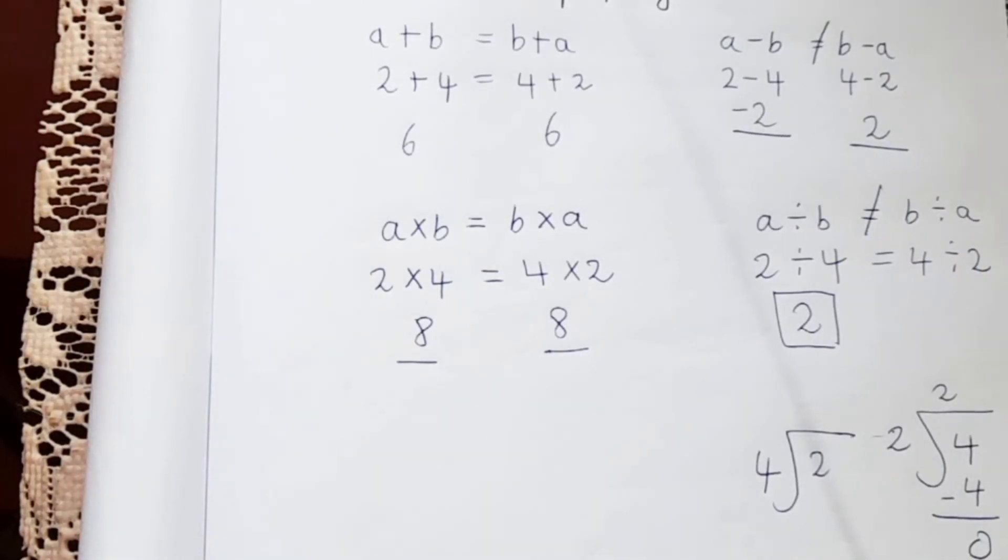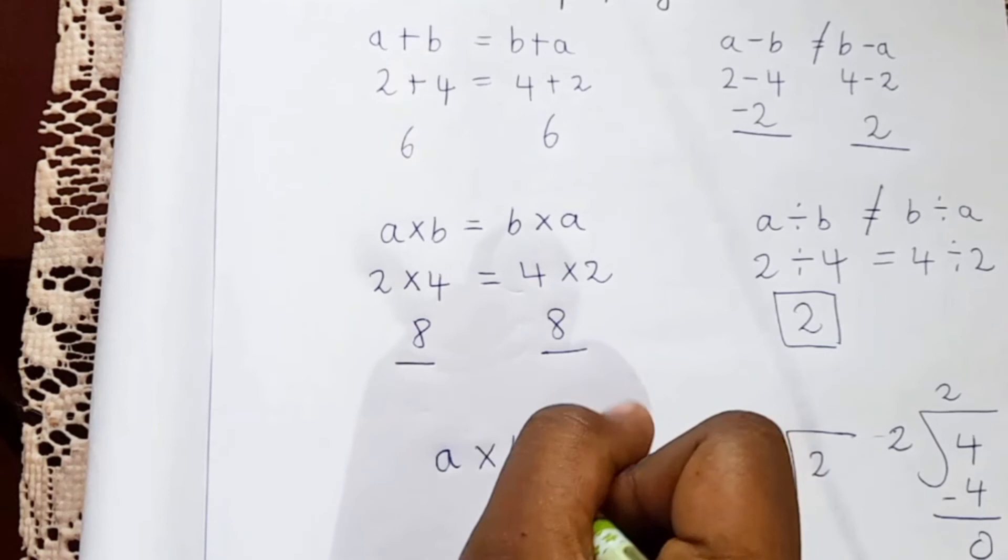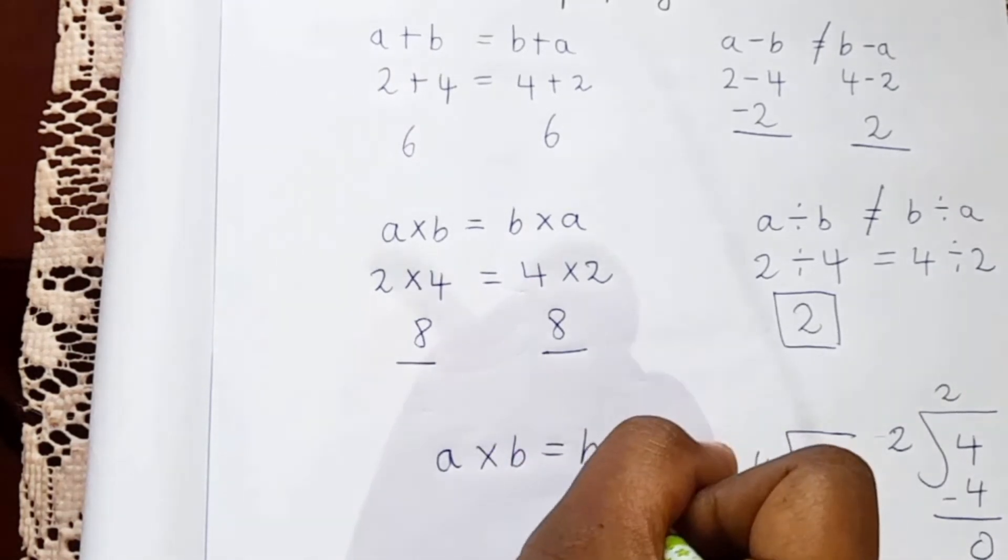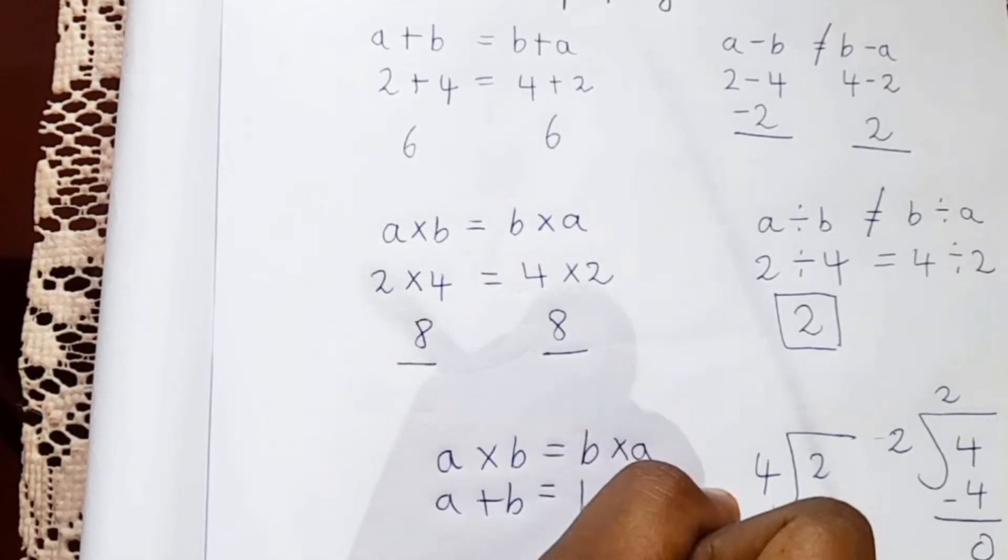But in addition and multiplication commutative property is there. So I'm saying you guys in commutative property we should write a into b as b into a and a plus b as b plus a.